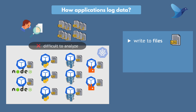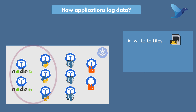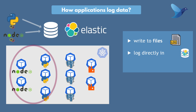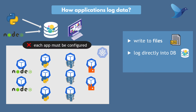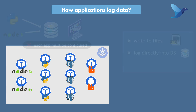Also, logs will be in different formats coming from different applications, like the timestamps and log levels, etc. Another option could be to log directly into a log database like Elasticsearch, to then have a visualization of this data. However, in this case, each application developer must add a library for Elasticsearch and configure it to connect to Elastic and send those logs. And also, each developer must configure the proper format. So again, there are some challenges with this option as well.